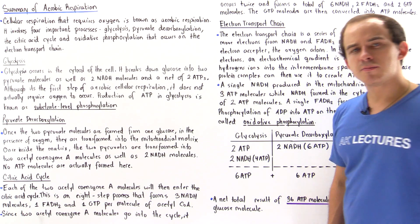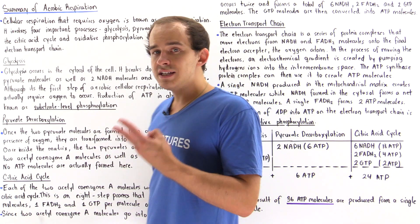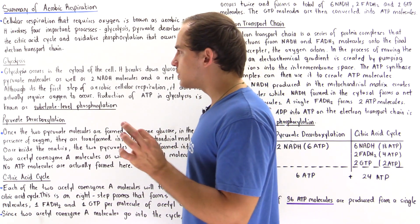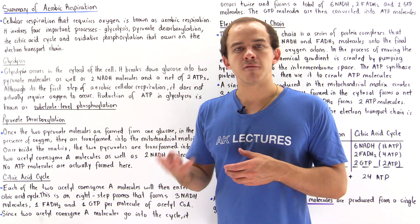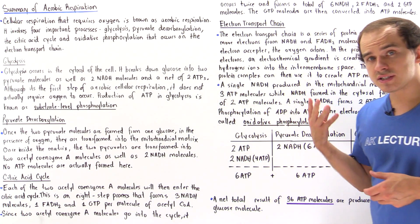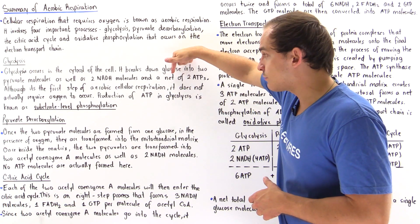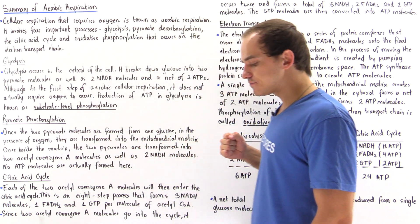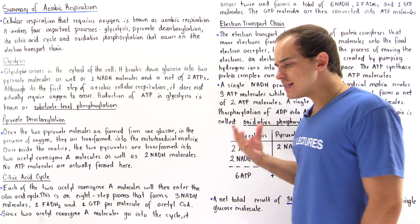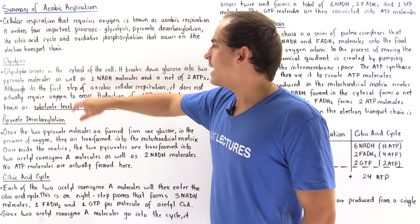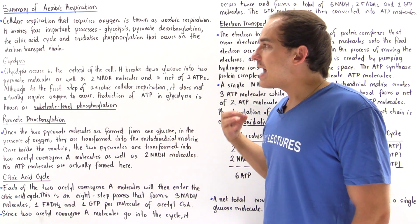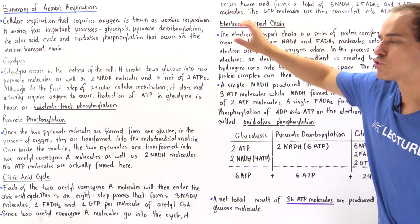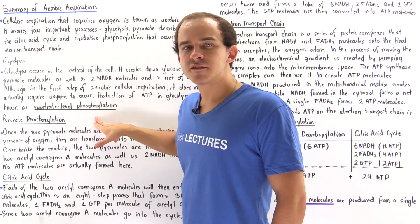Glycolysis is the breakdown of a glucose molecule into two ATP molecules, two NADH molecules, and two pyruvate molecules. Glycolysis actually produces four ATP molecules total, but because it uses up two, the net result is two ATP molecules per single glucose molecule. Glycolysis takes place in the fluid portion of the cytoplasm known as the cytosol. The production of ATP without using the electron transport chain proteins is known as substrate level phosphorylation.